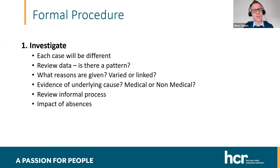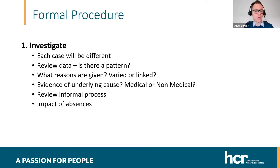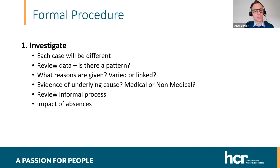If despite those informal steps an employee's attendance fails to improve, the first step would normally be to carry out some further investigation. That's going to involve reviewing the absence data — what's the level of absence, how does that contrast with the individual's peers across the school, what are the reasons for the absence, are they varied or linked in any way, and is there any evidence of an underlying cause? And perhaps most importantly, what's the impact on the school and the individual's colleagues in terms of the rate of absence.